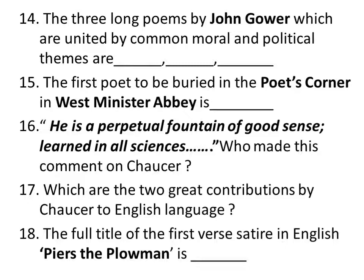The Chaucerian stanza or rhyme royal is a stanza of seven lines in iambic pentameter which rhymes a-b-a-b-b-c-c. It got the name 'rhyme royal' because James I of Scotland used this form in his work The King's Quair.